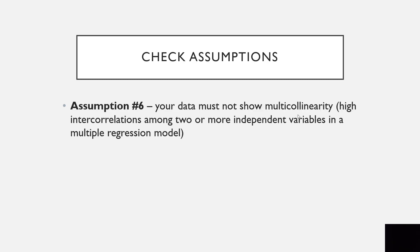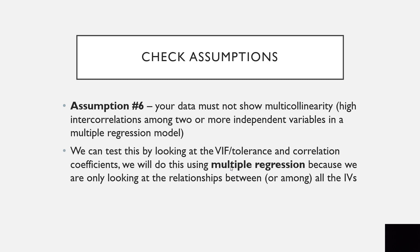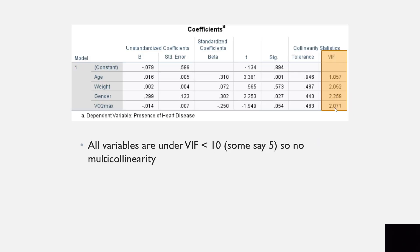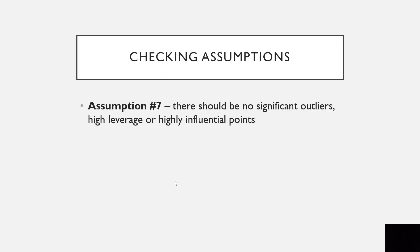For assumption 6, your data must not show multicollinearity — high intercorrelations among two or more independent variables in a multiple regression model. We test this by looking at VIF and tolerance, but we need to use the multiple regression procedure since it cannot be done in the logistic regression procedure. Going to Analyze, Regression, Linear, moving over all variables, clicking Statistics, and selecting Collinearity Diagnostics, we see that all VIF values are less than 10 — some say less than 5 — so we have no multicollinearity. We will now go back to the logistic regression procedure.